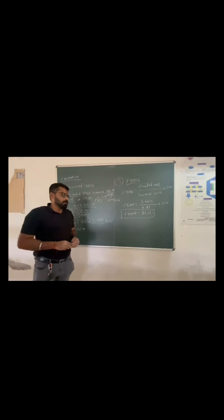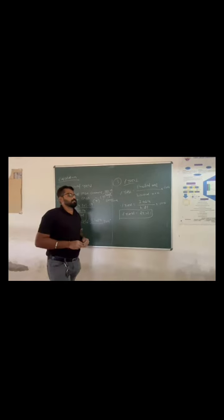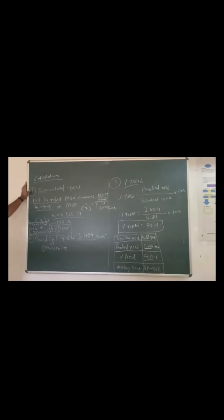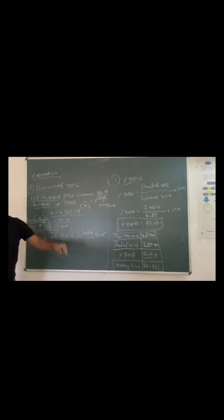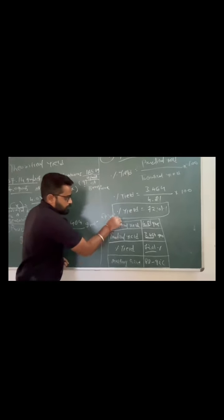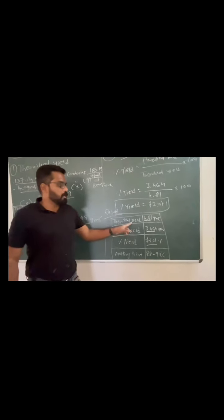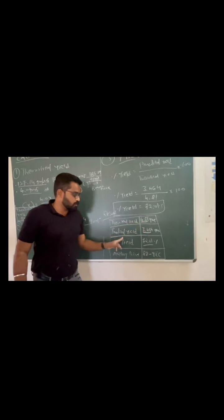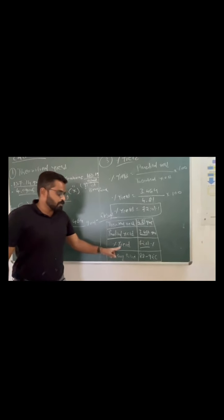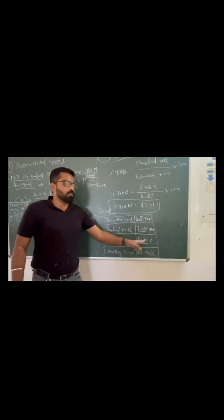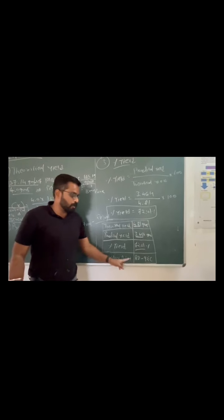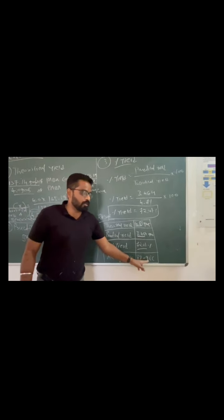This completes the practical of today's synthesis, that is benzocaine. Here is the entire calculation as we discussed: theoretical yield, practical yield, and percentage yield. Last is the result table. Here is the result table. Theoretical yield: 4.81 grams. Practical yield: 3.464 grams. Percentage yield: 72.01 percent. And lastly, melting point: 88 to 92 degrees Celsius. Thank you.